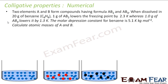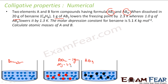Next question: two elements A and B form compounds AB2 and AB4. When 1 gram of AB2 is dissolved in 20 grams of benzene, it lowers the freezing point by 2.3 K. When 1 gram of AB4 is dissolved in 20 grams of benzene, it lowers the freezing point by 1.3 K. The molar depression constant for benzene Kf = 5.1 K·kg/mol. We need to find the atomic masses of A and B.